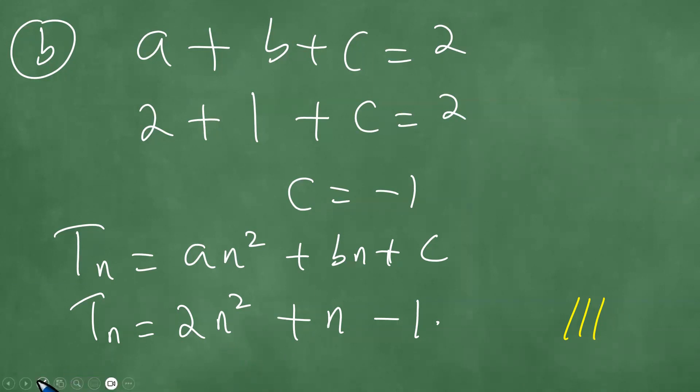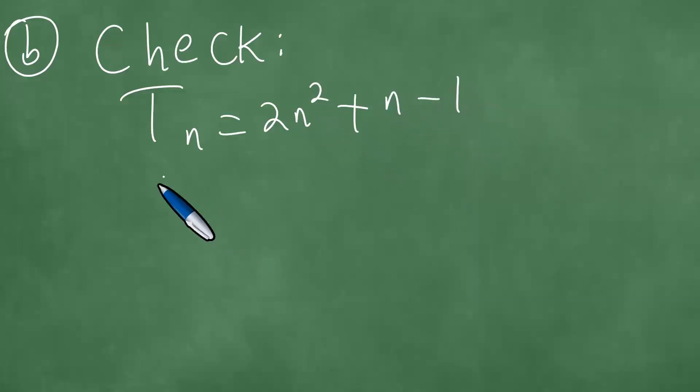Now we can do a check. The examiner did not ask us to check, but we can do a check in part b. How do you do a check? We got that Tn equals exactly 2n squared plus n minus 1, so that t1 is 2 into 1 squared plus 1 minus 1, which equals 2.